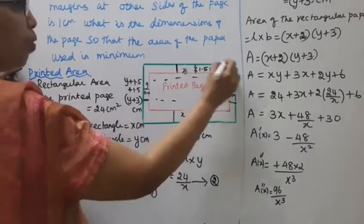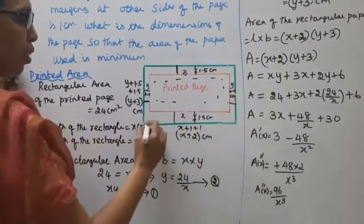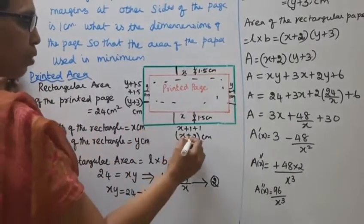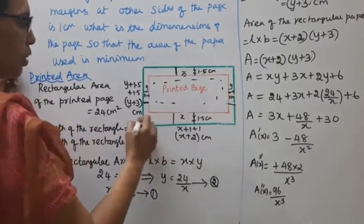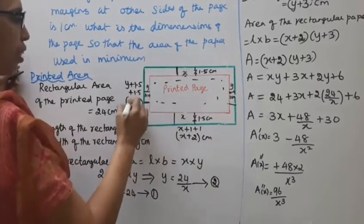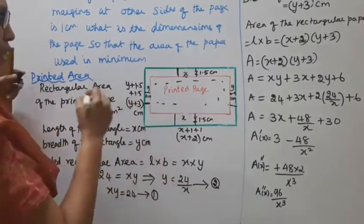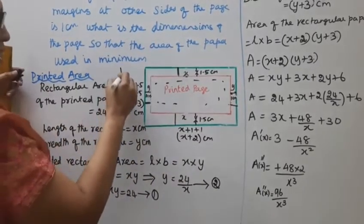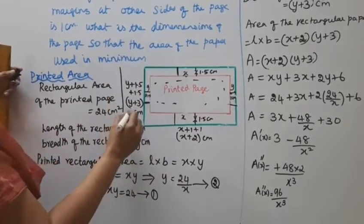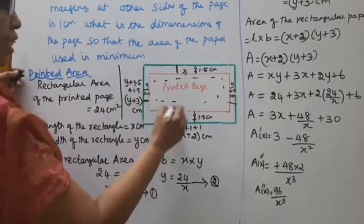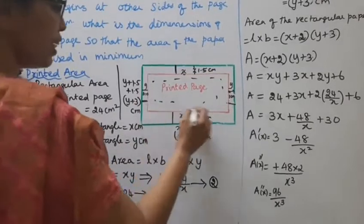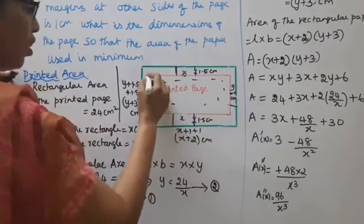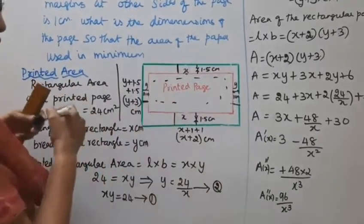So the paper length is x plus 2 cm and breadth is y plus 3 cm. The printed page dimensions are x by y.